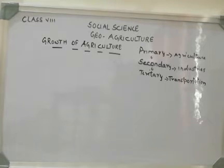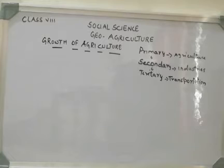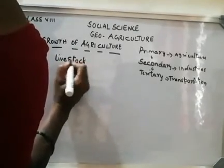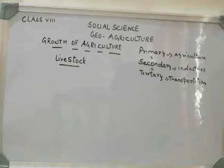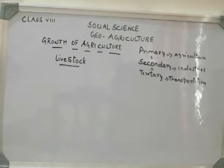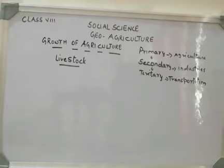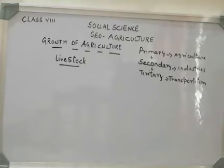Agriculture is a primary activity, defined as the art and science of cultivating the soil and growing crops. It also includes rearing of livestock — that is, cattle kept on the farm such as goat, sheep, cow, and buffaloes. Secondary activities are where raw materials are processed into finished products — for example, jute fiber is used for making jute bags. Tertiary activities provide services to primary and secondary sectors, such as transport, communication, banking, and insurance.